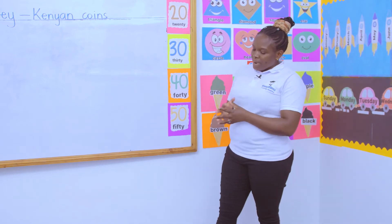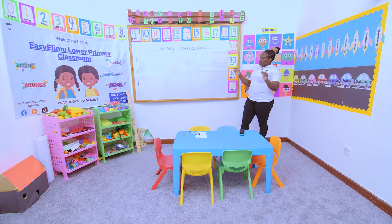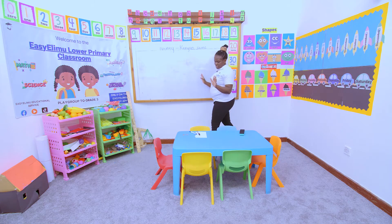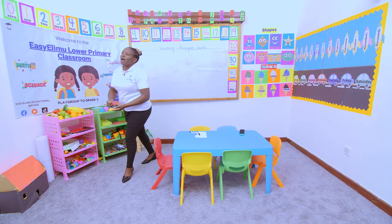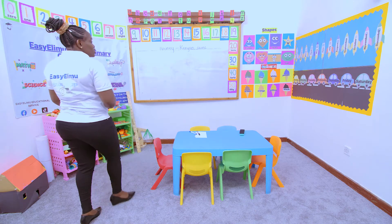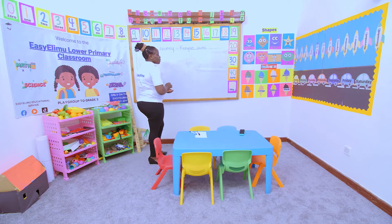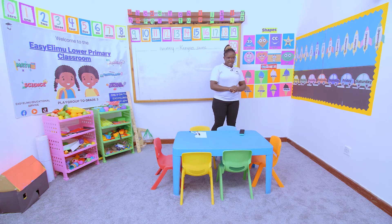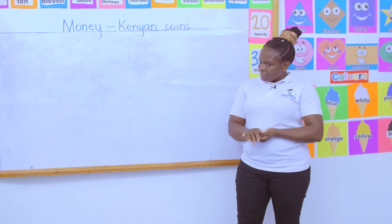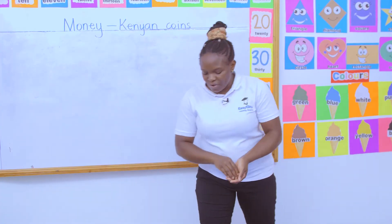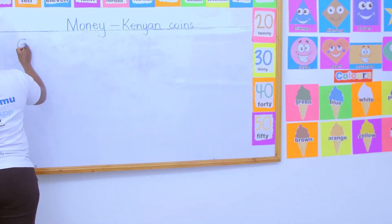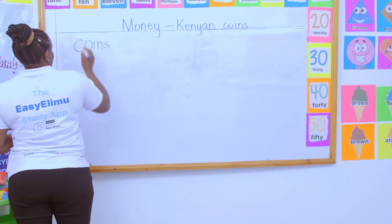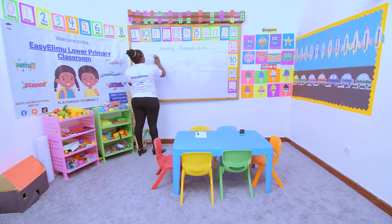When you talk about Kenyan money, money is divided into two denominations. There are those ones — when I carry them to the shop, they make noise. You can't know that that person has money, because of the kind of nature they are made of. Have you ever seen that kind of money? These ones are called coins. A coin is metallic money.